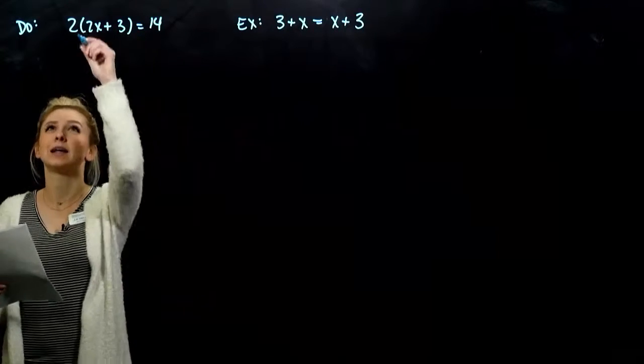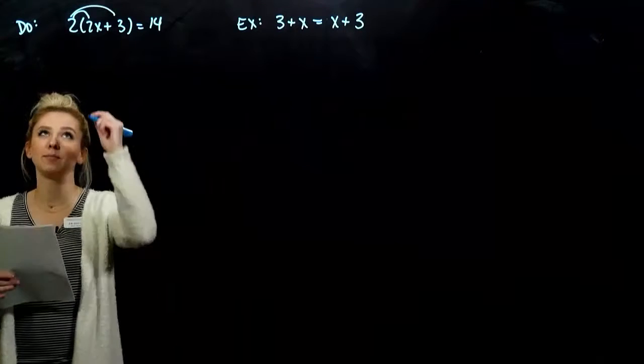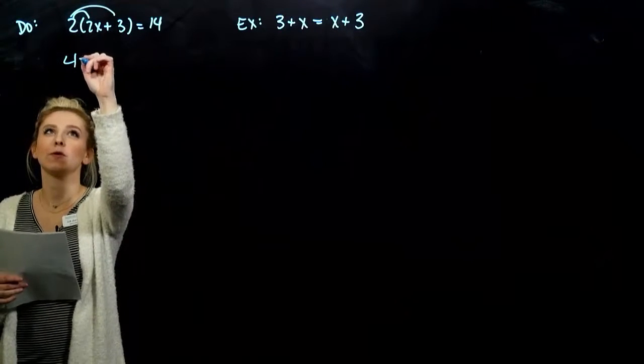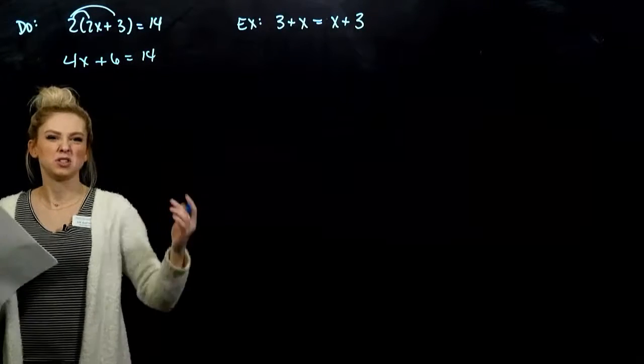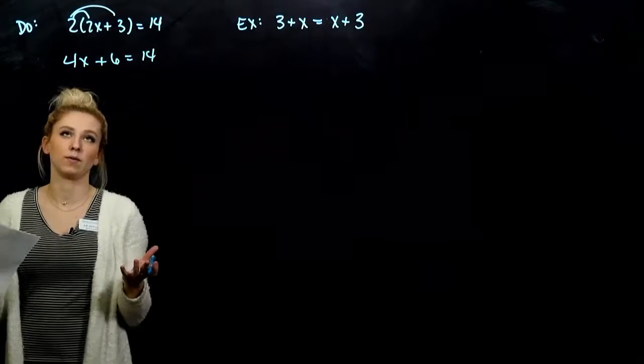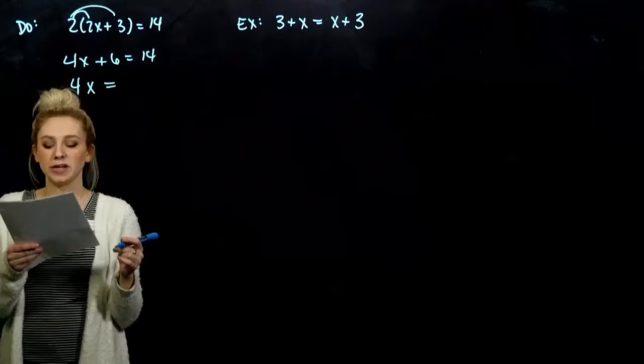If I do have parentheses, I need to distribute whatever is out on the front to the inside to get rid of it. So 2 times 2x will give me 4x, 2 times 3 will give me 6, then we just proceed as normal. So get rid of the parentheses in the first place.